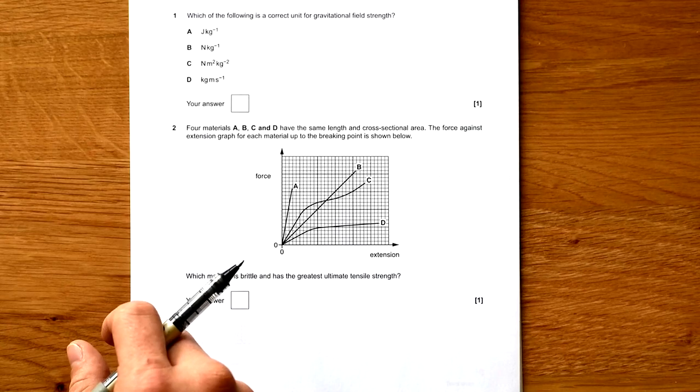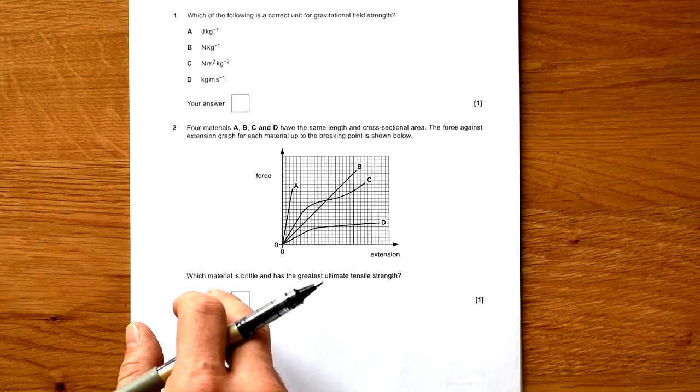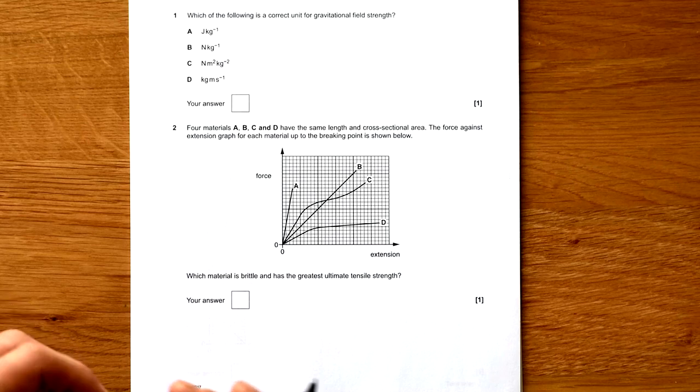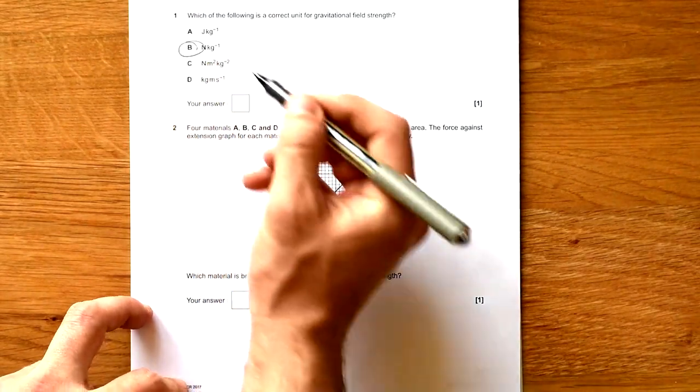Alright, let's have a look at the 2017 OCR A-Level Physics Paper 1, Modeling Physics. Question 1: Which of the following is a correct unit for gravitational field strength? Any field strength tells you the number of newtons per unit something. In this case it's going to be newtons per kilogram.